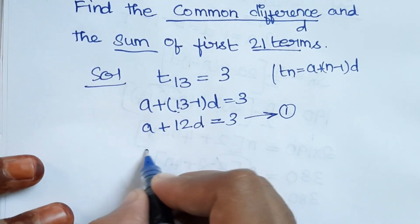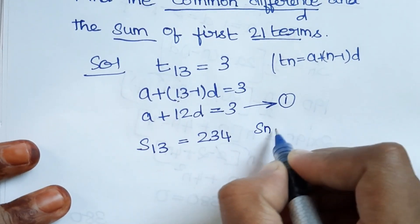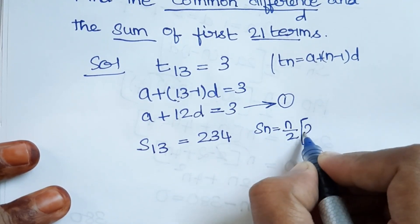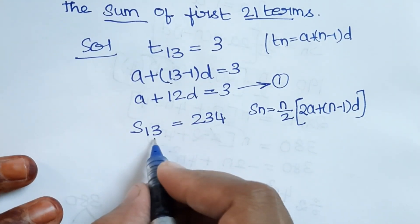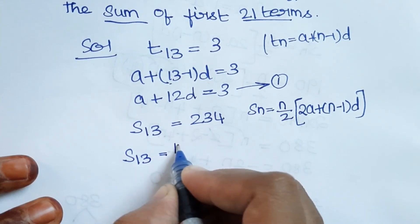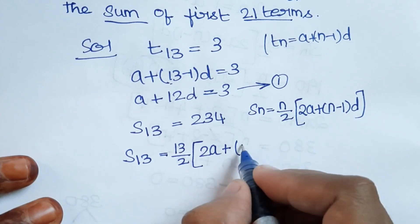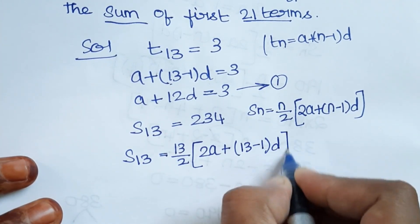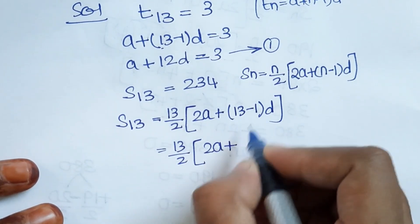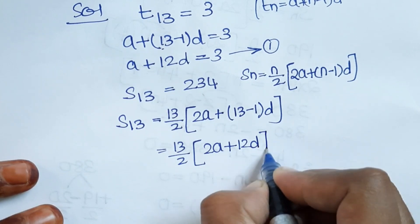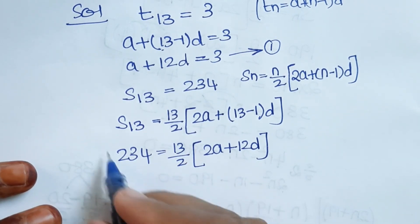Now for the summation: S(13) = 234. Using the S(N) formula N/2 × (2A + (N−1)D), substituting N=13 gives 13/2 × (2A + 12D) = 234.